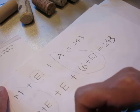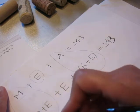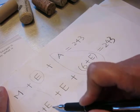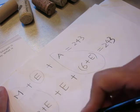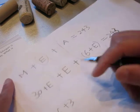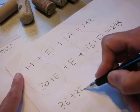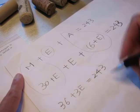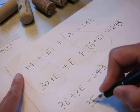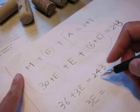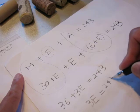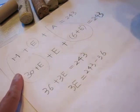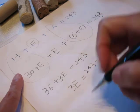So 30 and 6 put it together, 36. One E, two E, three E plus 36. Three weight of Emily equals 243. So 3 Emily's weight equals 243 minus 36.